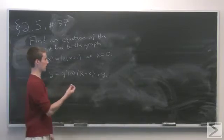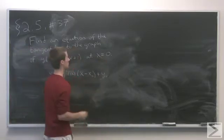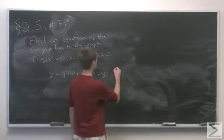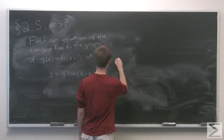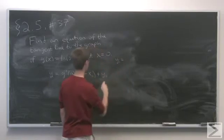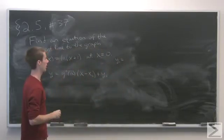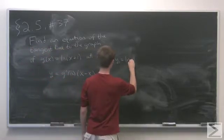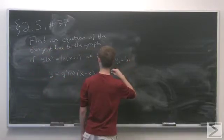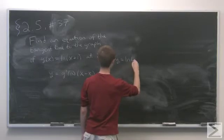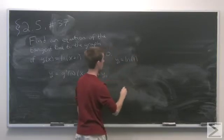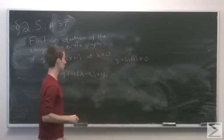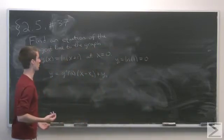We're given that x0 equals 0. The next step is to find y0, which is just the function evaluated at x0. So y0 equals natural log of 0 plus 1, which is natural log of 1, which equals 0. So the point of tangency is just the origin.